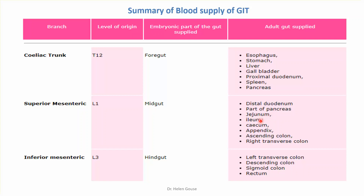The midgut organs include the jejunum, ileum, cecum, appendix, ascending colon, and right two-thirds of the transverse colon. So if asked, the appendix is supplied by the artery of the midgut, whereas the stomach is from the artery of the foregut. The duodenum and pancreas get blood supply from both the foregut and the midgut.